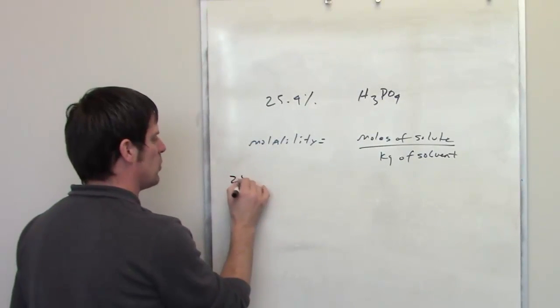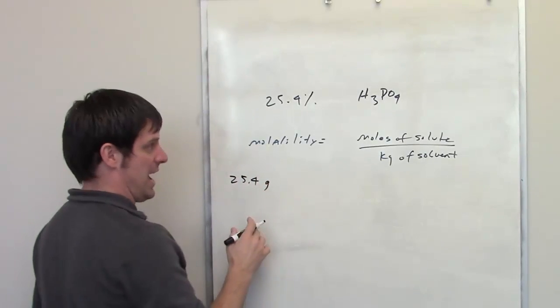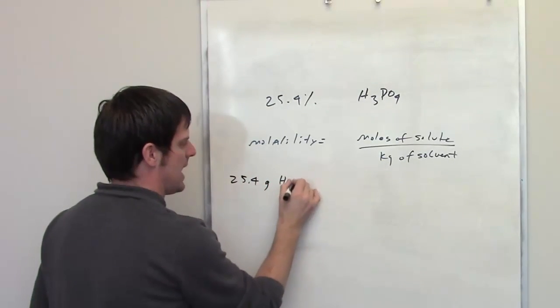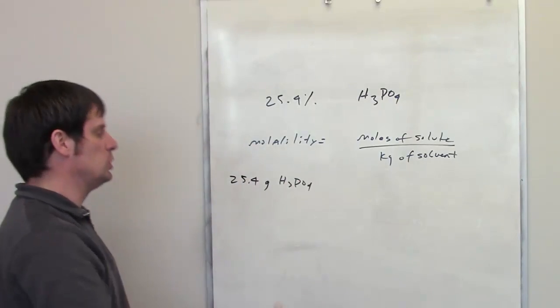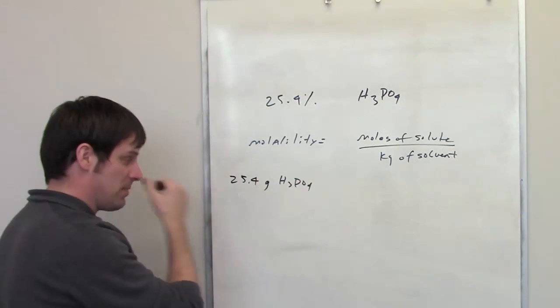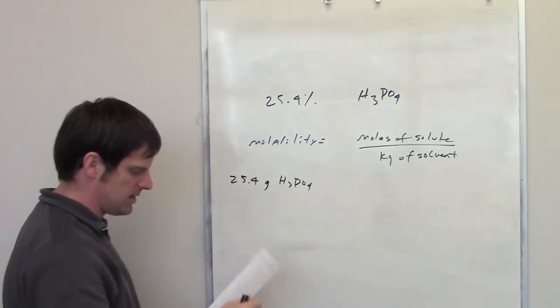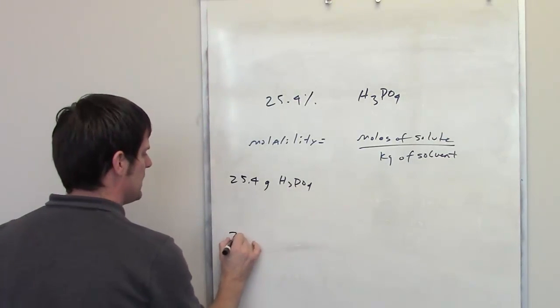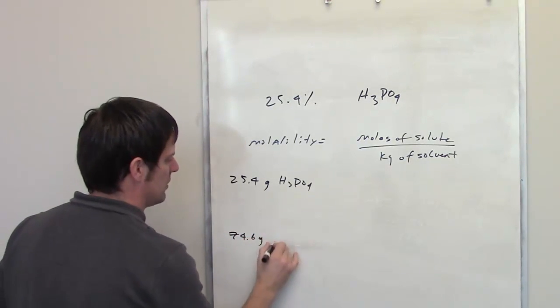25.4 grams of that would be phosphoric acid. In that 100-gram solution, once again 25.4 grams of it would be phosphoric acid, and 74.6 grams of it would be water.